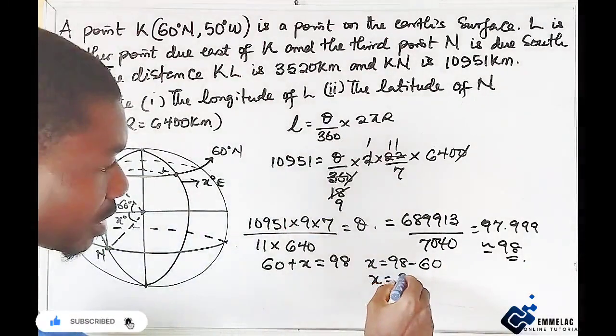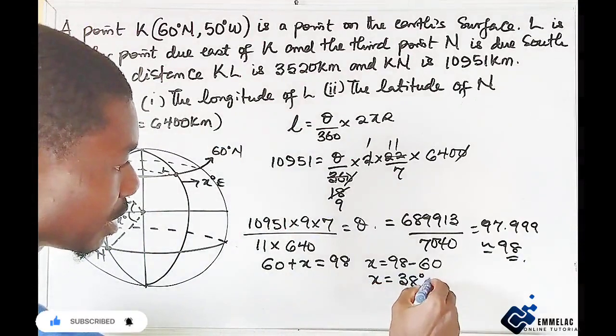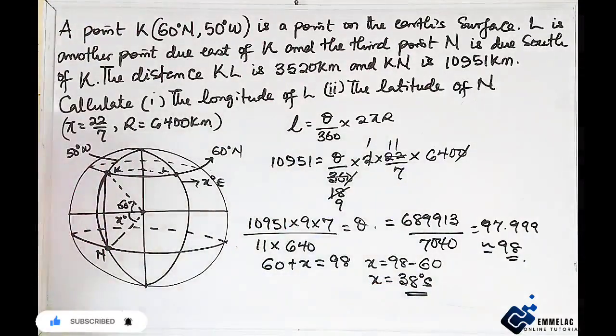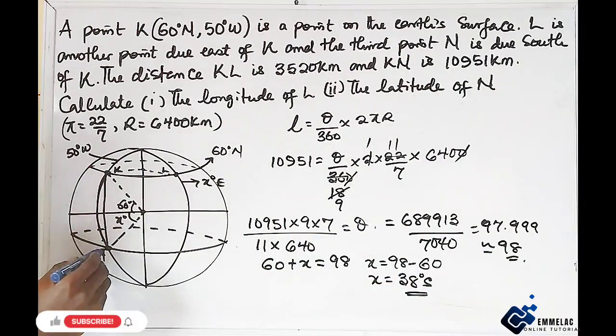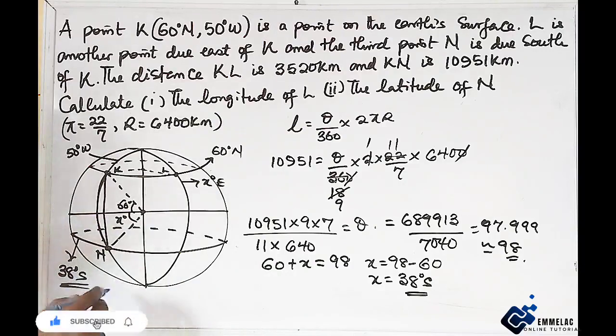Approximately 38 degree south. So the latitude of N is 38 degree south. Final answer.